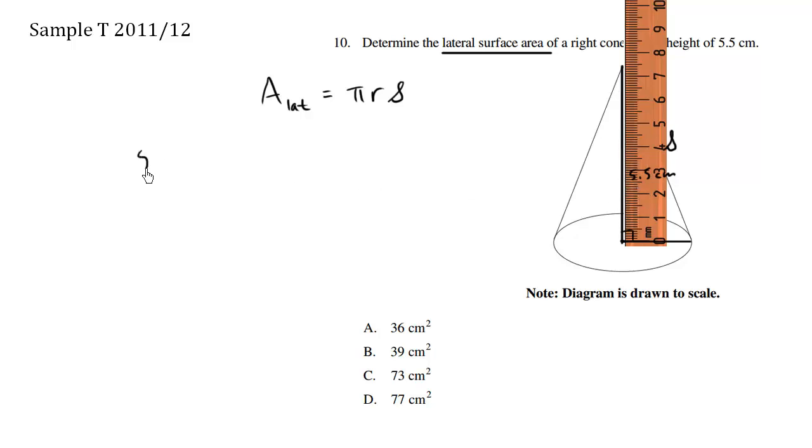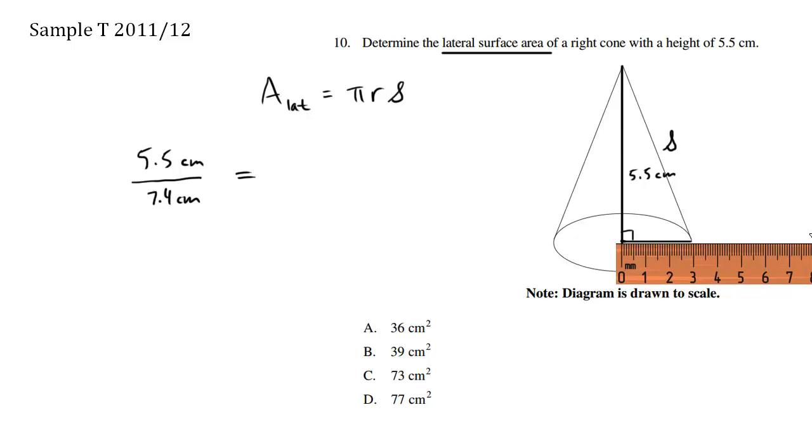We have 5.5 centimeters, and the ratio we're comparing it with is the actual ruler, and our ruler measures approximately 7.4 centimeters. This equals to, we can see here the radius of our measurement is approximately 2.9. So the r-value, we'll call this r centimeters, over 2.9 centimeters. The denominator here for ratio is consistent. It's what we measure from our ruler, as opposed to the numerator, which is the actual length based on the diagram.